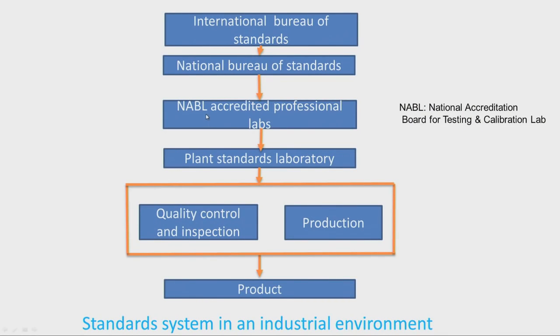While preparing the inspection report, we should note the error indicated on the instrument. The plant standards laboratory equipment should then be compared with equipment at NABL accredited professional labs, which are of superior quality. In turn, the accredited professional labs' instruments are compared with national bureau of standards. This way all measuring instruments are compared with higher accuracy instruments in a step-by-step manner.